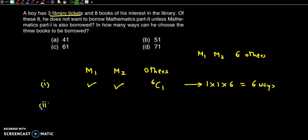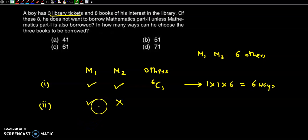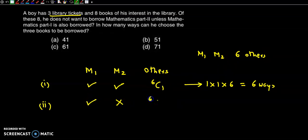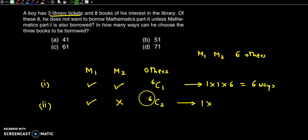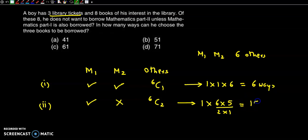Case 2: He selects Maths Part 1 but not Maths Part 2. He then selects 2 books from the 6 others. So the number of selections is 1 × 6C2 = 6×5 / (2×1) = 15 ways.